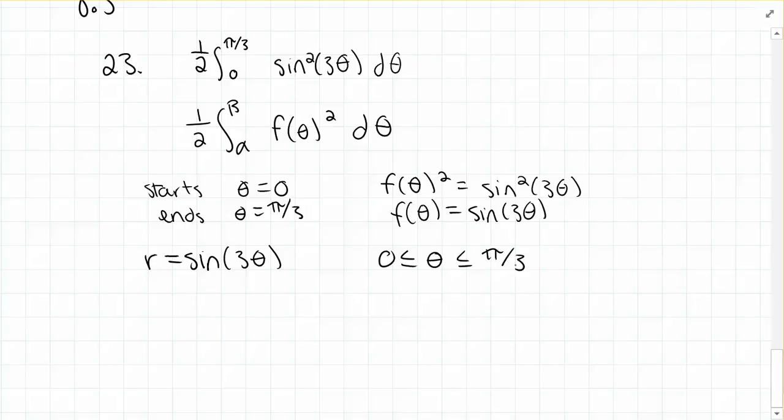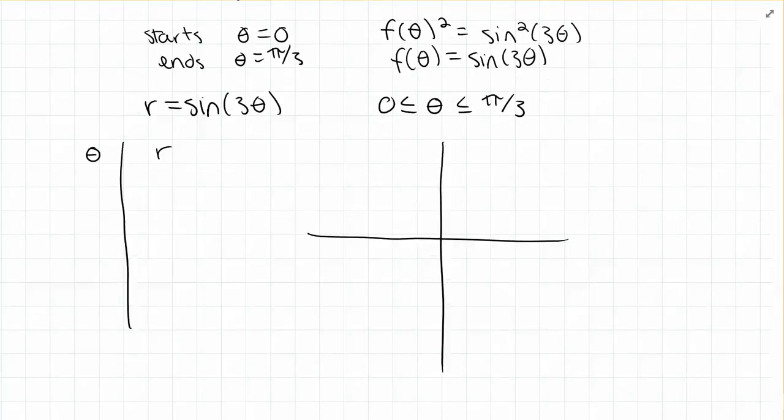So I'm going to make a table of values. Starting with 0, when theta is 0, sine of 0 is 0, so r is 0.